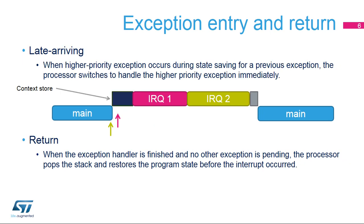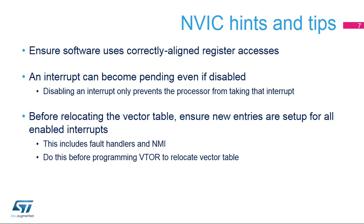When an interrupt arrives, the processor first saves the program context before executing the interrupt handler. If the processor is performing this context-saving operation when an interrupt of higher priority arrives, the processor switches directly to handling the higher priority interrupt when it is finished saving program context. When all of the exception handlers have been run and no other exception is pending, the processor restores the previous context from the stack and returns to normal application execution.